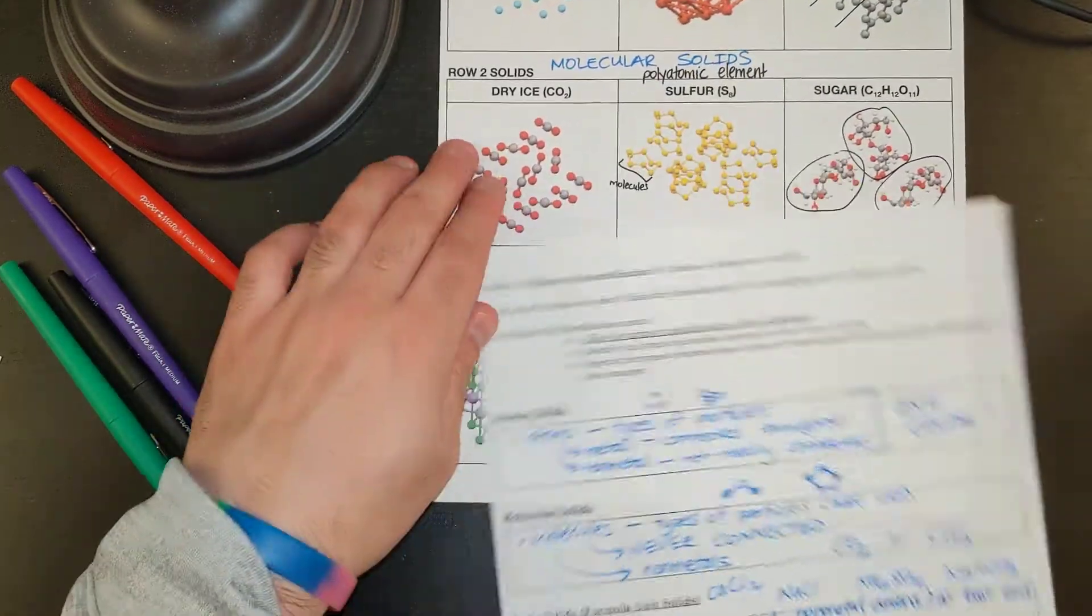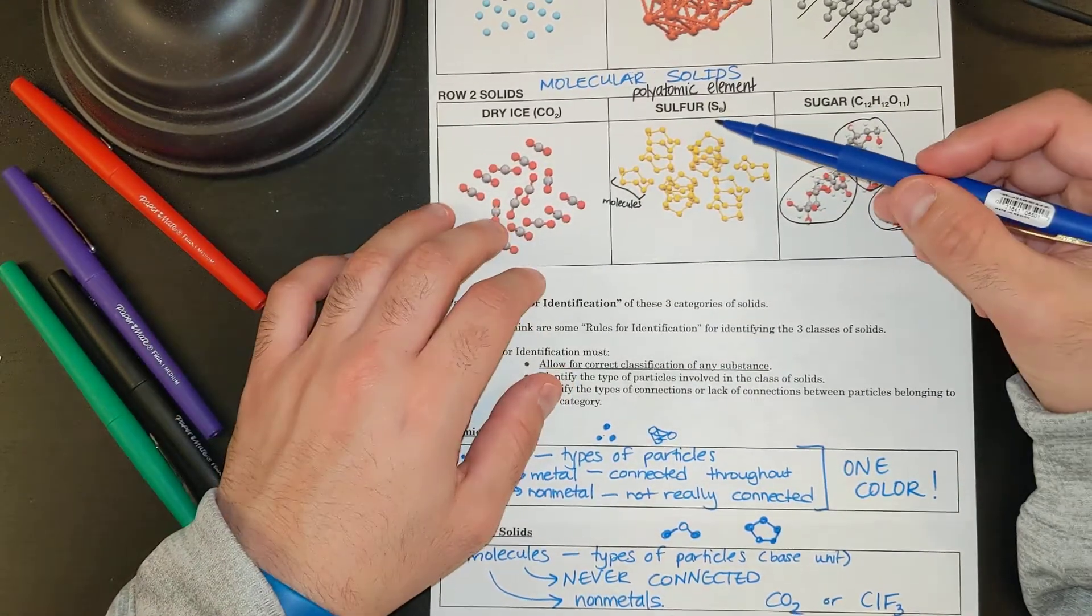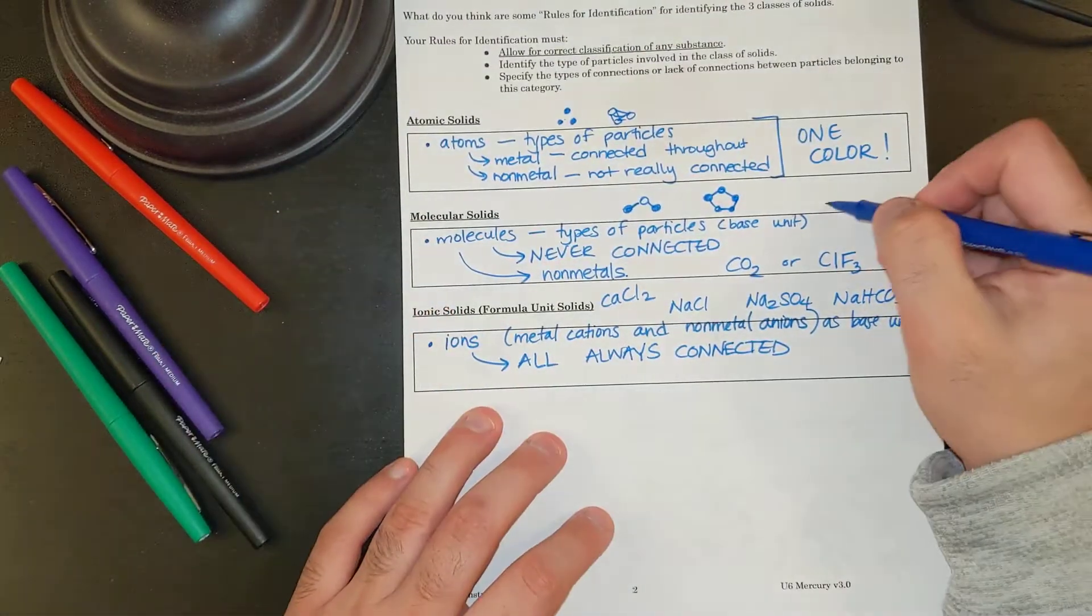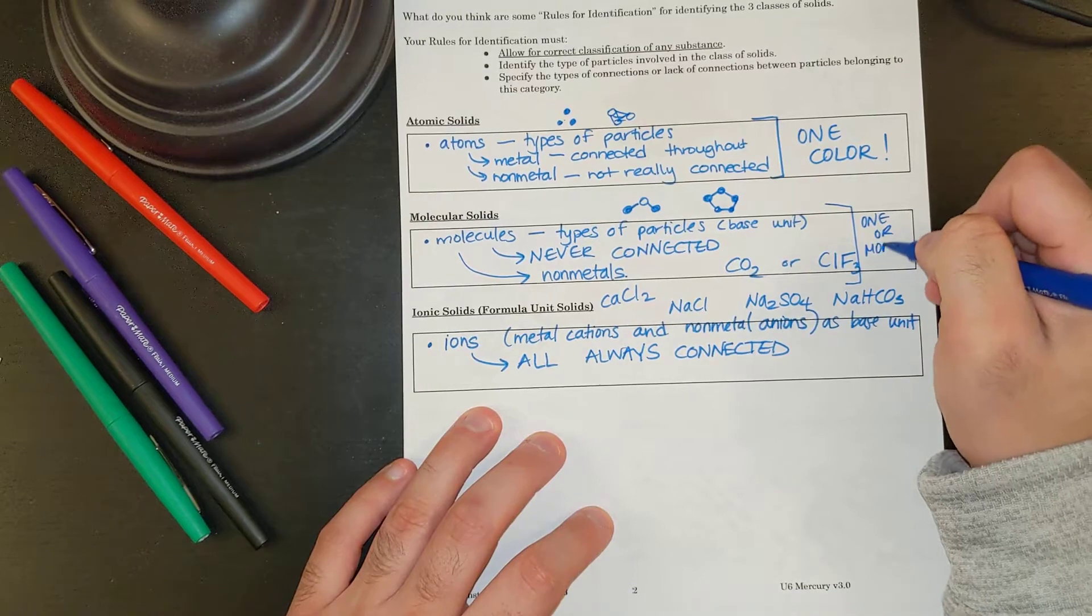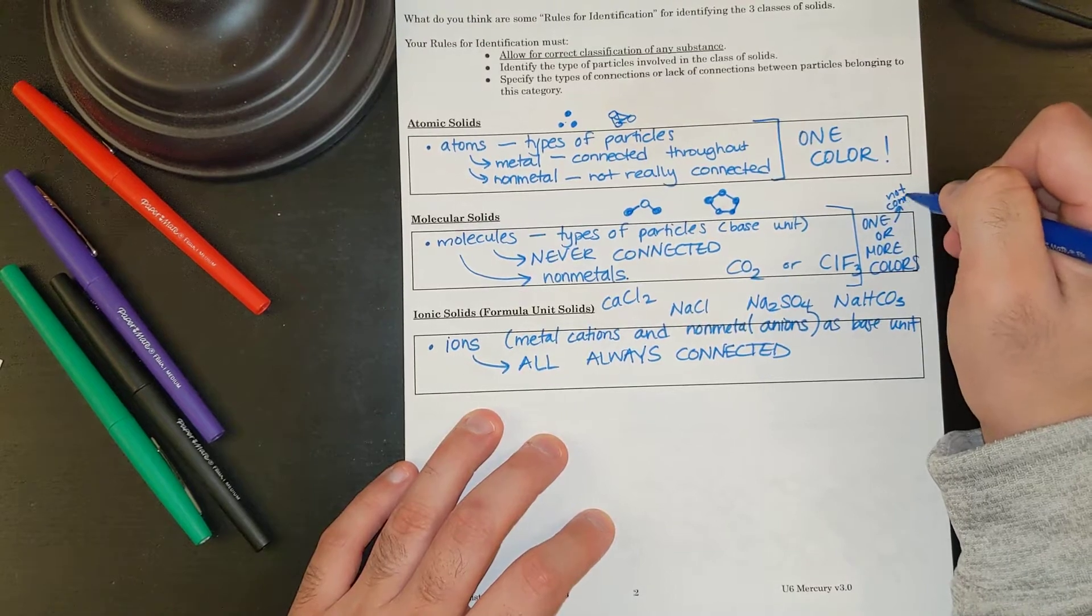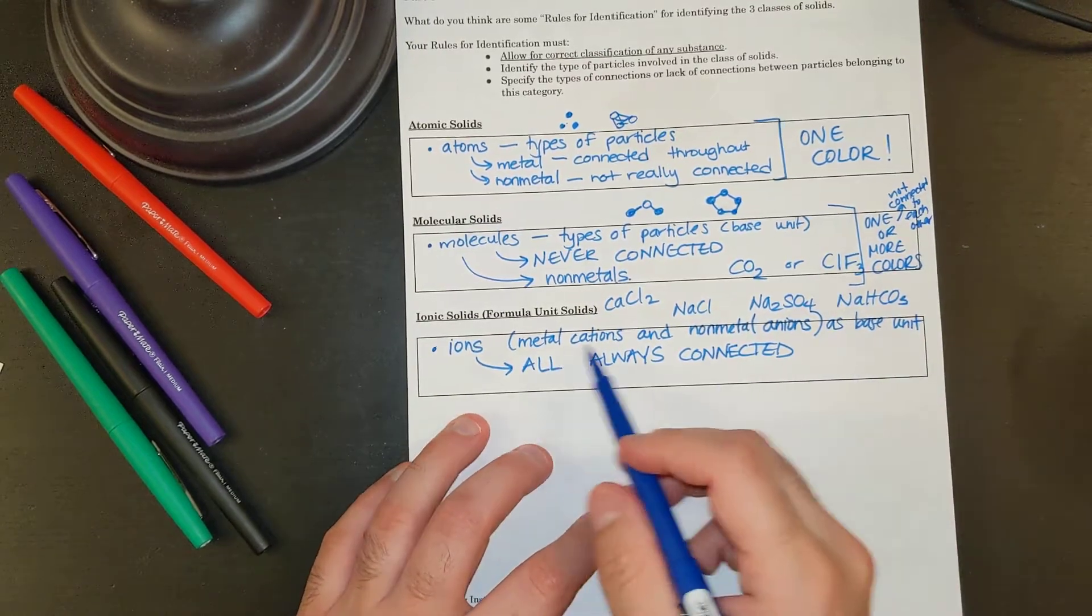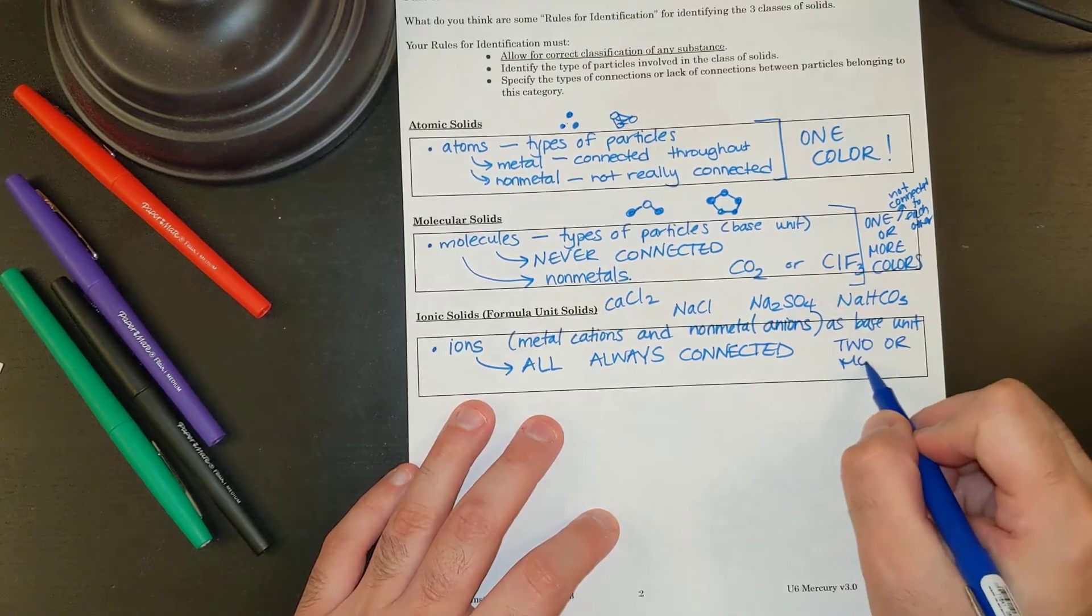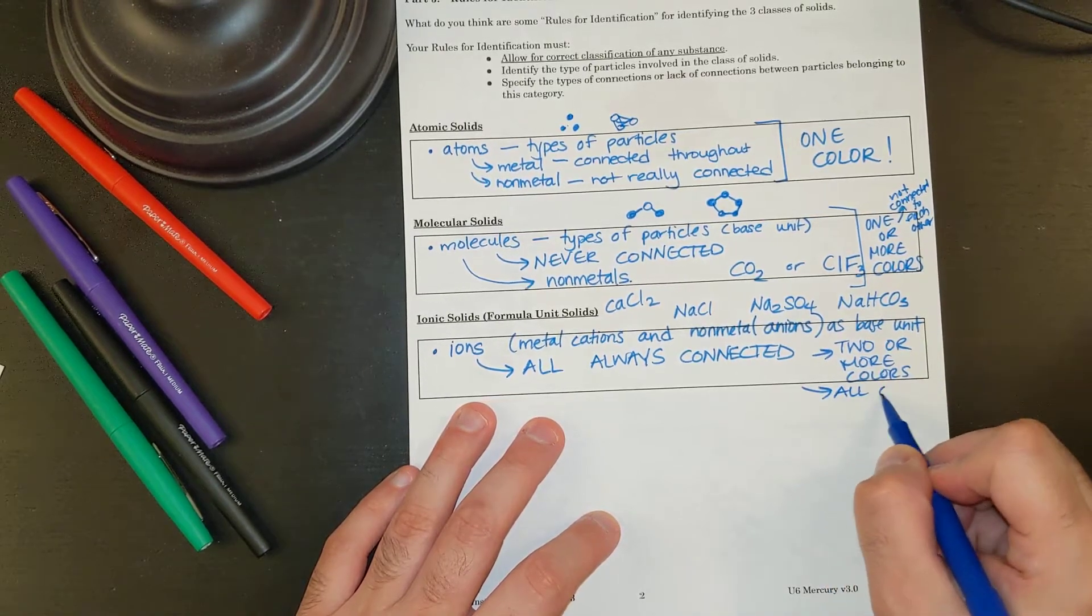Looking at my molecular solids, I could have more than one color, or one color. So I really can't use color. Because sulfur is a molecule, and it's all one color and connected. So the big thing could be one or more colors, and the only thing that's going to distinguish that is that they're not connected to each other. Whereas ionic solids, they're going to be two colors, two or more colors. And they're all connected.